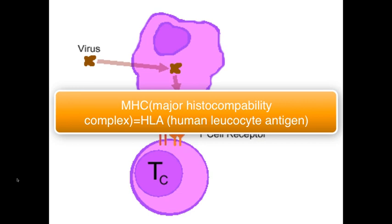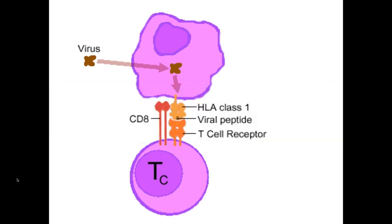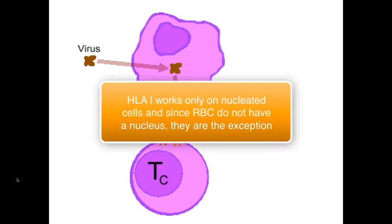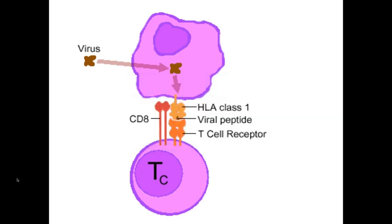They all express MHC class 1, also known as human leukocyte antigen class 1. The one exception is non-nucleated cells, such as your red blood cells. So if any of your cells have aged enough, or if they have been exposed to a foreign material which they have engulfed and digested, they will start to express a molecule called HLA class 1, which will present a portion of the digested material on their cell surface so that CD8 cells can come and bind to them and kill them.